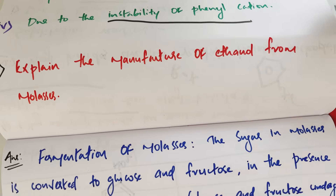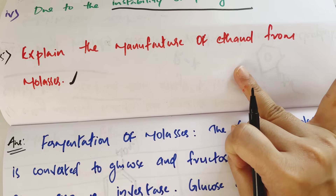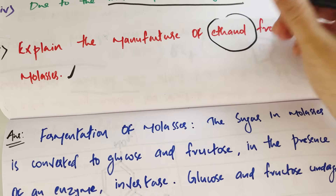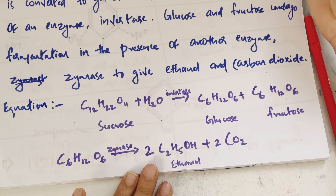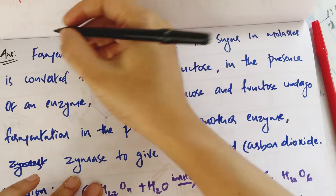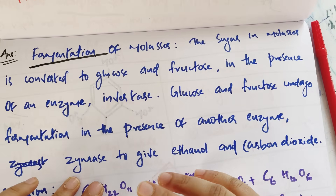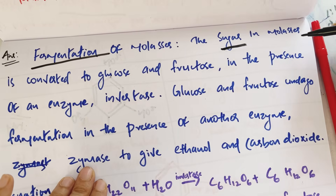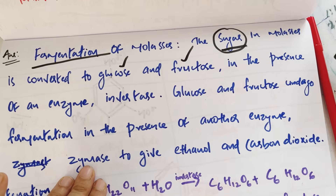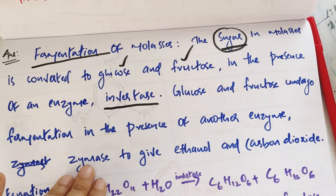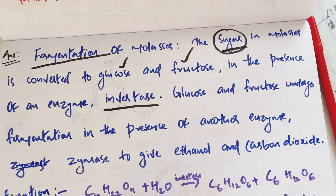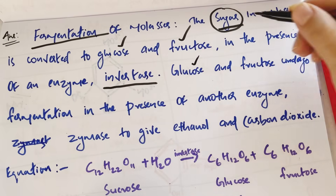Explain the manufacture of ethanol from molasses. Ethanol and methanol preparation is important in the alcohols chapter. The sugar in molasses is converted to glucose. In the presence of the enzyme invertase, sucrose (C12H22O11) is converted to glucose and fructose.